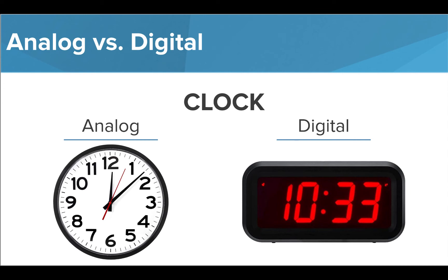Another great example of something that can be analog or digital is a clock. An analog clock could conceivably show an infinite number of times using the minute, hour, and second hands, but a digital clock can only display a discrete number of values on the screen.